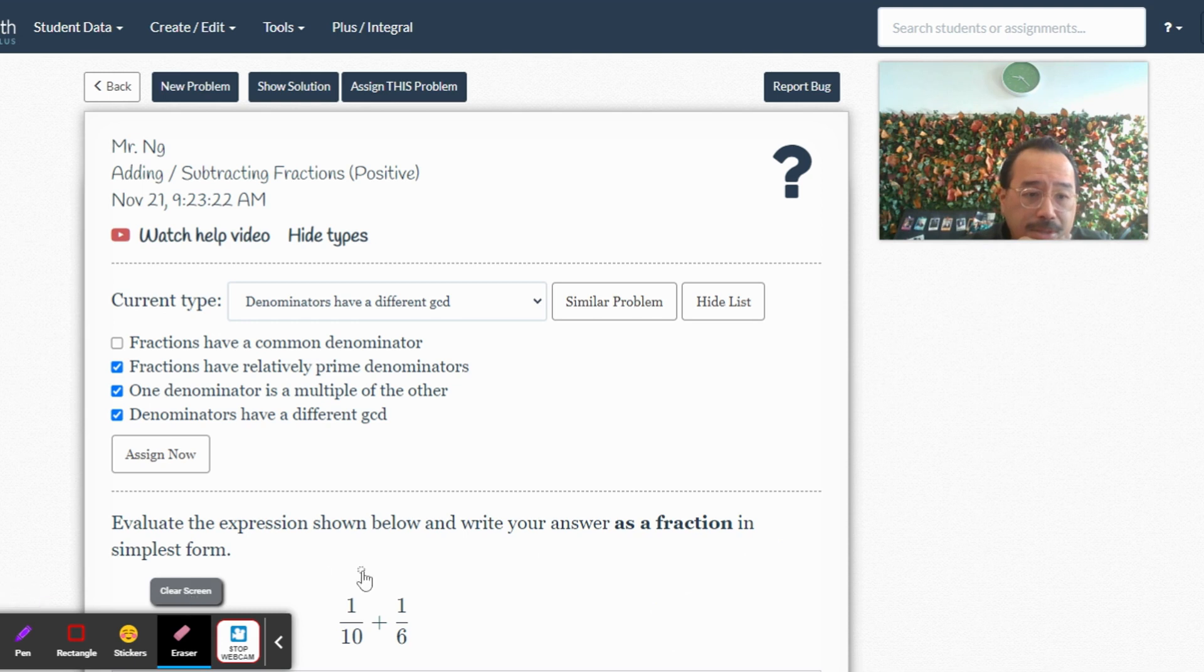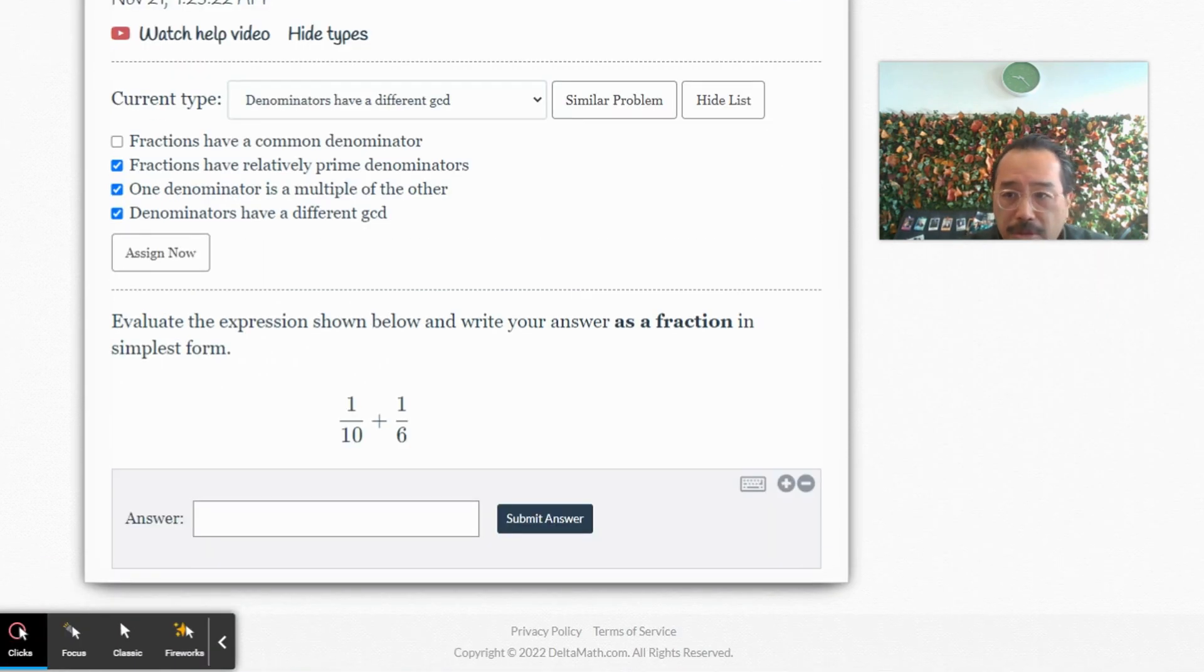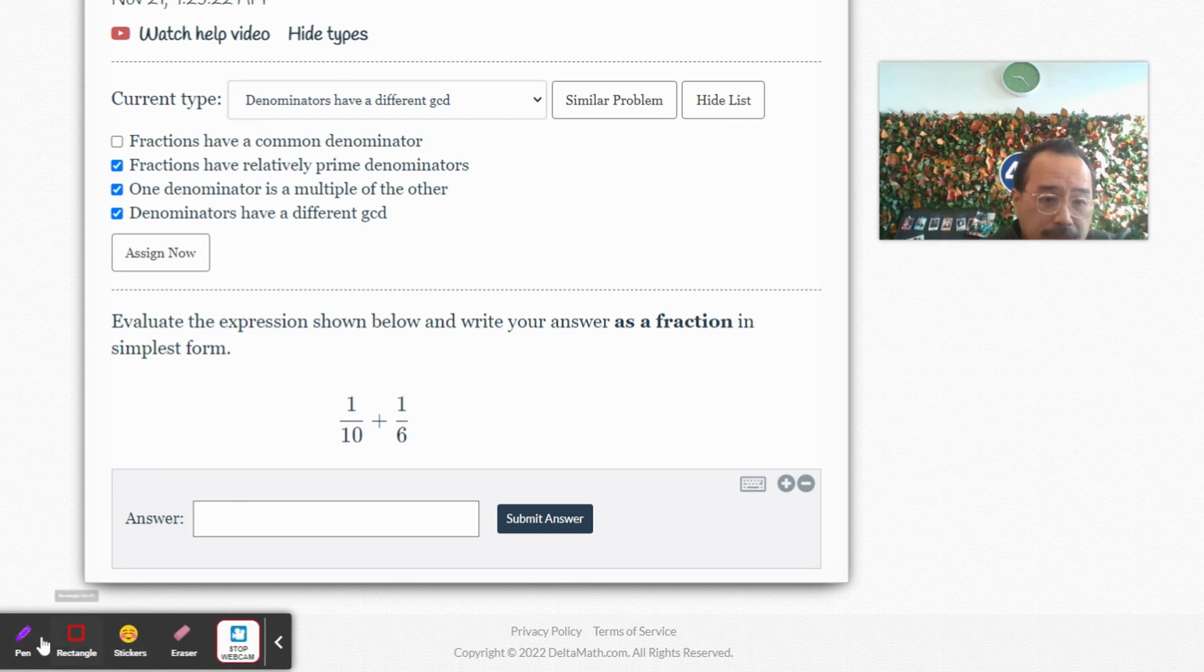Alright, let's do this one then. This one's adding. Okay, between 10 and 6 is not 60. Let's see, I need to get the pen. Okay, it's 30, right?